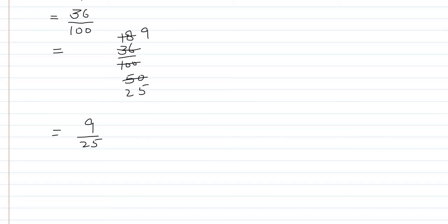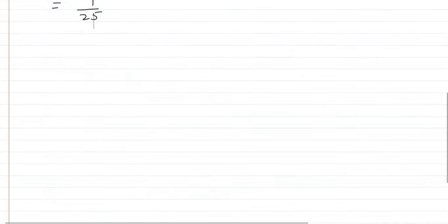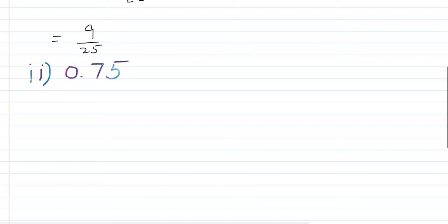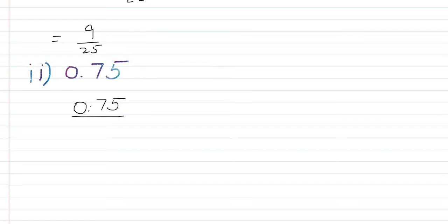Now we move to the second part, which is 0.75. Using the same steps, we write 0.75 as a fraction: place 1 below the decimal point, count the digits on the right side of the point — there are 2 digits — so we place 2 zeros. This gives us 75 over 100.